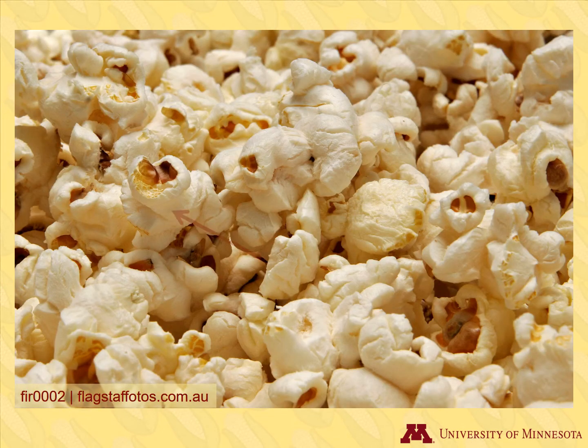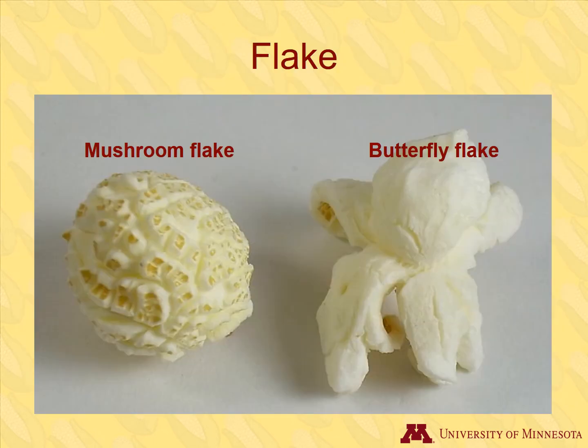There are two main kernel colors: white and yellow. The kernels in this photo are yellow, as evidenced by the seed coat remnants. Incidentally, this is what gets stuck in your teeth after eating popcorn. However, it does contain fiber and nutrients, so it's not all bad. The shape into which the kernel pops is called the flake. Mushroom and butterfly are the names of the flake types.